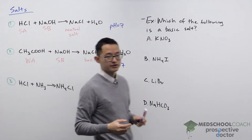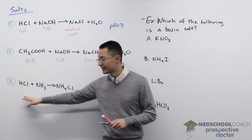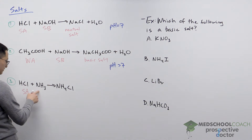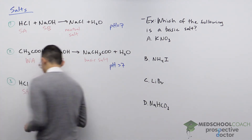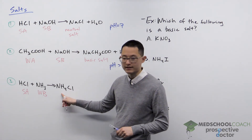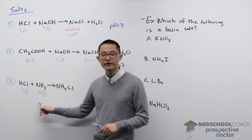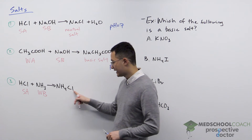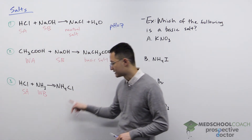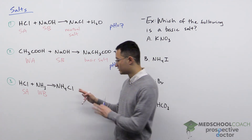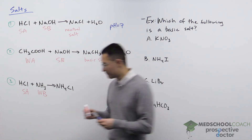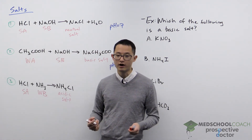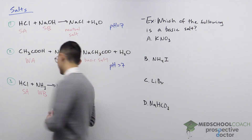Finally, let's look at our last situation. We have HCl, hydrochloric acid, and we add ammonia to form ammonium chloride. HCl is a strong acid and ammonia is a weak base. Looking at the salt: NH4+ is the conjugate acid of a weak base, and since the conjugate of a weak is another weak, ammonium is a weak acid. Chloride is the conjugate base of a strong acid, so it has no basic properties. So our salt has no basic properties but is weakly acidic — this is an acidic salt. Adding ammonium chloride to pure water gives a pH less than seven.